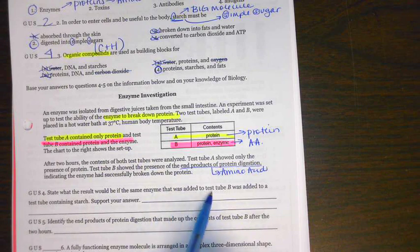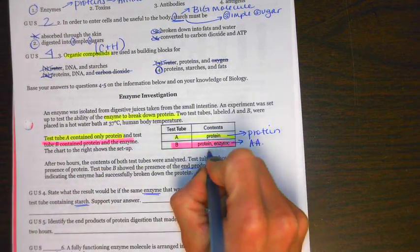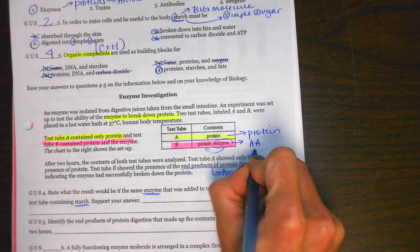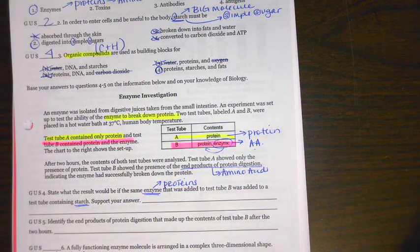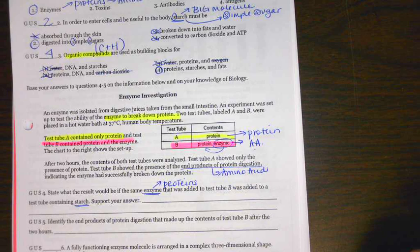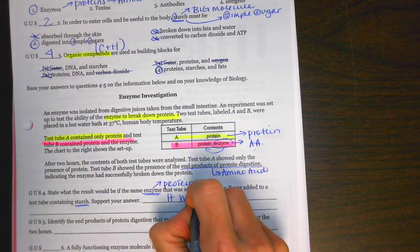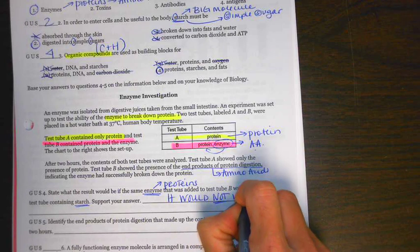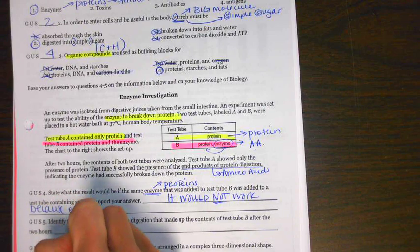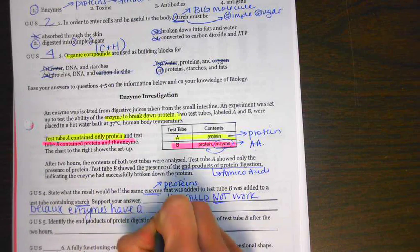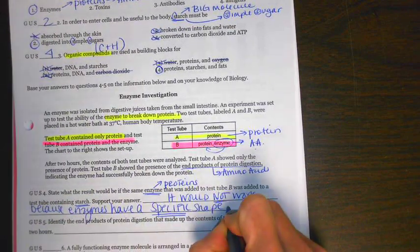Make sure you're marking up your paper so that you can better analyze the questions. It says, state what the result would be if the same enzyme that was added to test tube A was added to test tube containing starch. But what you have to remember is, this enzyme is capable of breaking down a protein into an amino acid. Remember, enzymes are one specific type of protein. Enzymes can't just work on anything. They have a very, very specific shape, which allows them to only do one function. So it would not work because enzymes have a specific shape which determines their function.